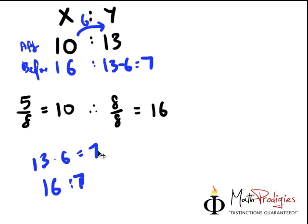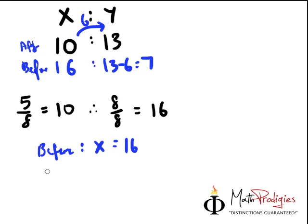So, how are we going to write it down in working format? All we have to do is basically write down, before, x equals to 16. Y equals to 13 minus 6 equals to 7. Therefore, ratio equals to 16 is to 7. That is it.